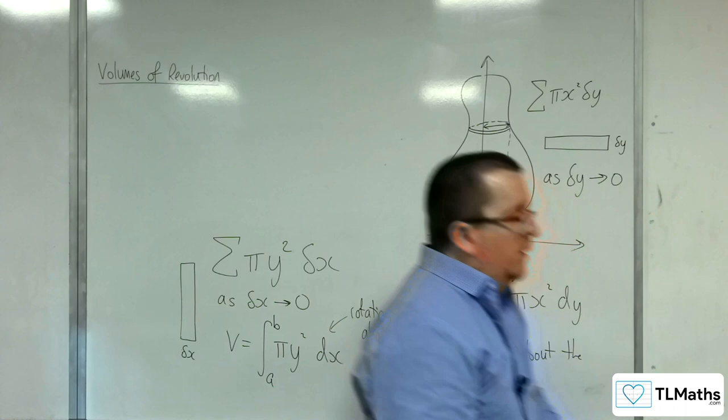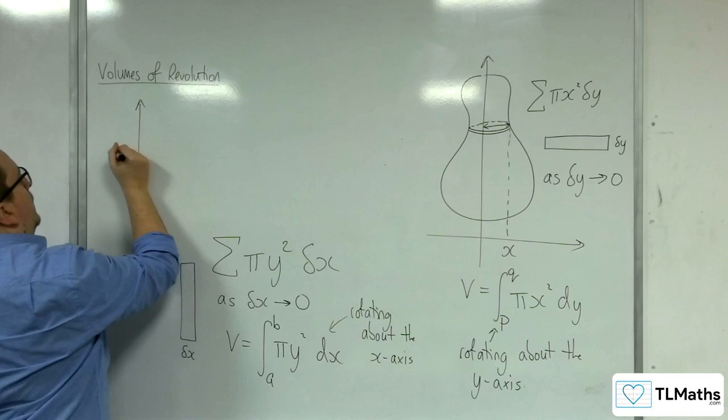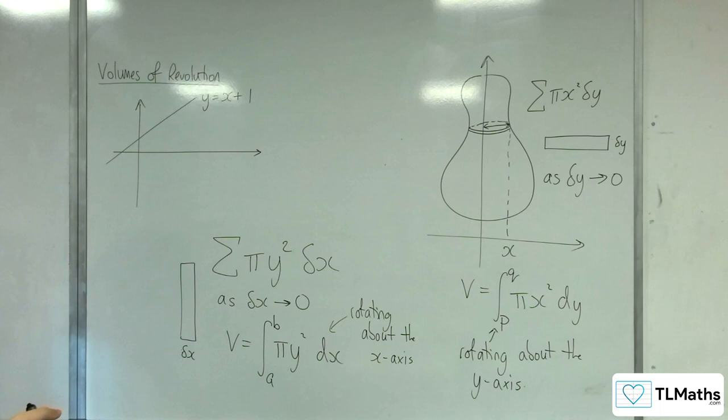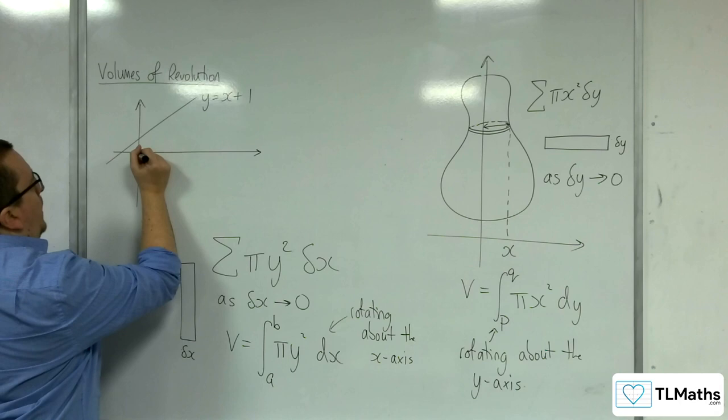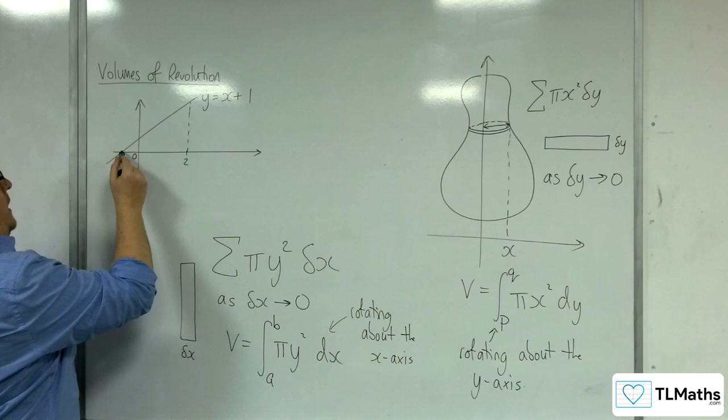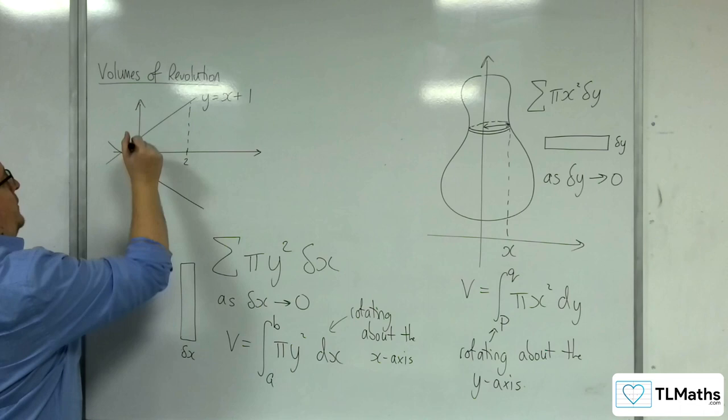So, for example, if we had, let's say, we had the line y equals x plus 1, and you rotated it about the x-axis, let's say, between 0 and 2. So, we're just looking at that region there, that trapezium shape. If I was to rotate it about the x-axis, then the shape that I would get would look something like this.